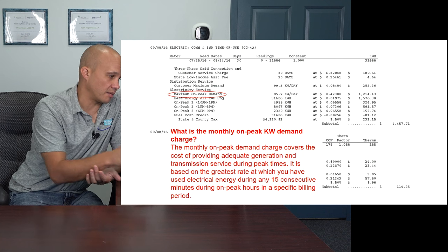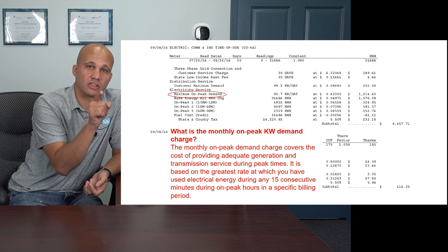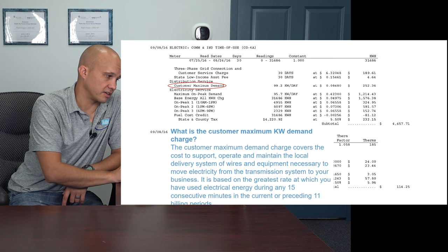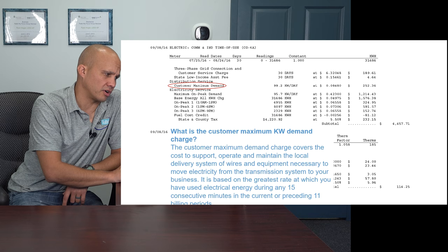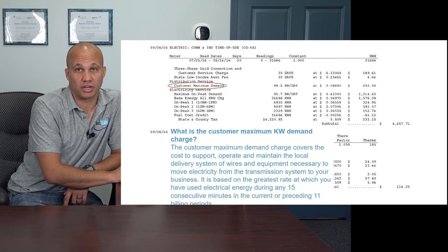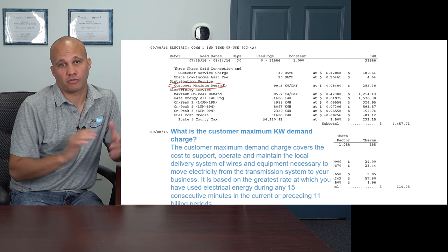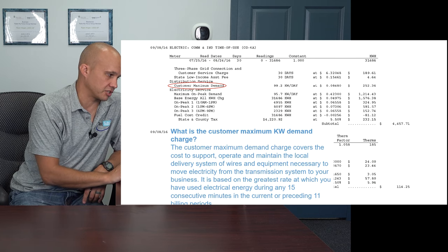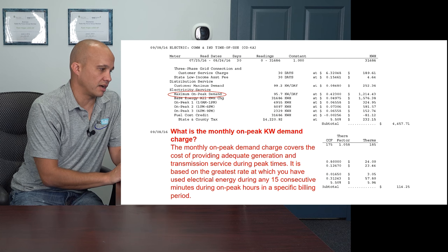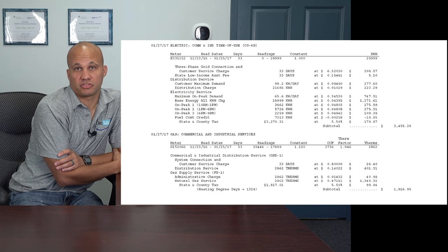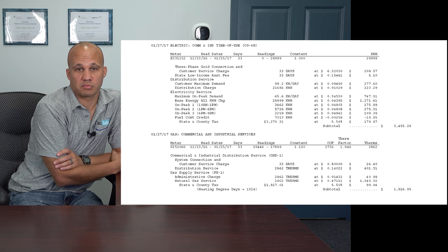Those demand peaks really add up and are impactful because they can last the whole year. Looking at a winter bill, that 99.2 KW distribution demand charge shows up on summer and winter — the exact same 99.2 — because it stays on there all year. It's the highest peak you had in any 15-minute window for the entire past 12 months. So if you make one mistake and put a bunch of loads on at the same time, you pay for it every single month for the whole year. The monthly electricity demand, however, was 95.7 KW in summer versus 65.6 KW in winter.